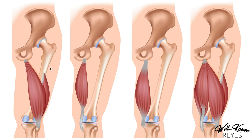Let's cover the biceps femoris in more depth. The long head originates at the ischial tuberosity, and the short head originates at the linea aspera of the posterior femur. They create a tendon together that inserts onto the head of the fibula. This muscle is in the posterior compartment of the thigh and is lateral, so it makes sense that it laterally rotates at the hip and knee when in a flexed position.